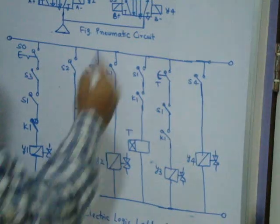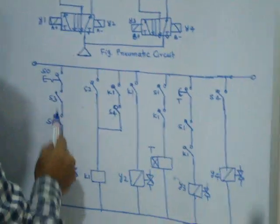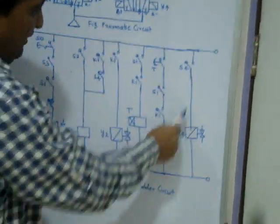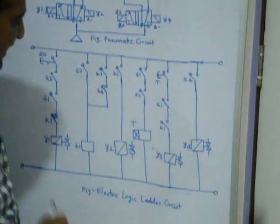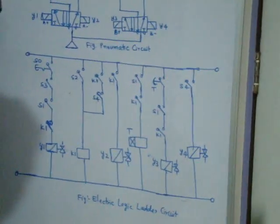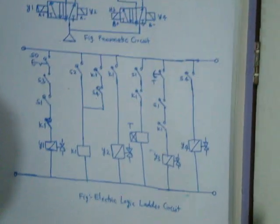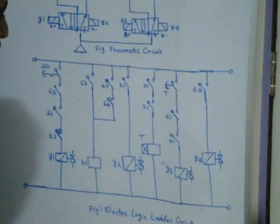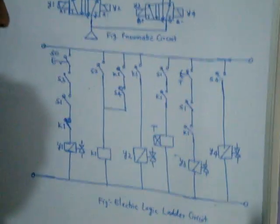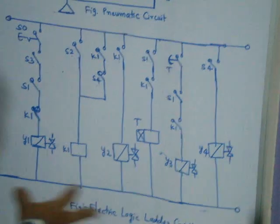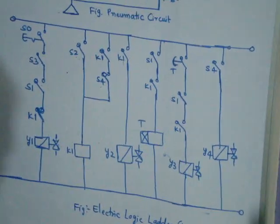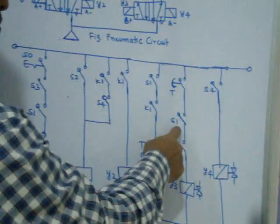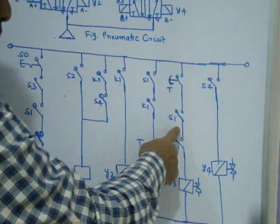When it comes back, S3 is on, S1 is already on, and K1 is closed — because K1 is off when it reaches S4. So the next cycle will continue. I hope you understood the working of A plus, A minus, delay, B plus, and B minus. The same circuit I will now show on the software — it is called Fluid SIM software or FSTO software. You can use S3 also; it is a desirable condition, not essential. If you are not using S3, it is also okay.